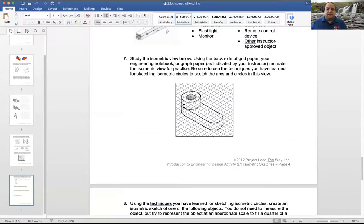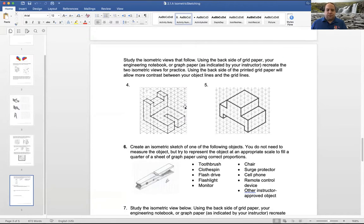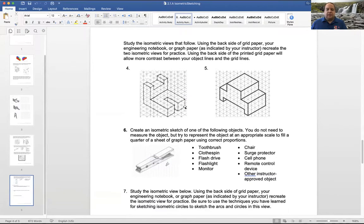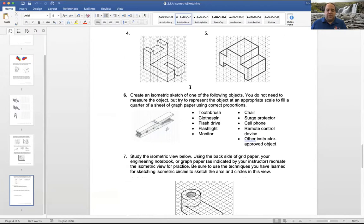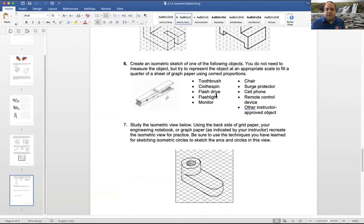You guys are going to pick some shapes. For homework yesterday, I had you do up to number five. Well, now, on that same Word document, we're going to do six, seven, and eight. You have to pick some shapes. So as we look here at some of the shapes that you can do, I will not allow you to do the clothespin. The clothespin is here, so we're not doing that one. But you can choose a toothbrush, a flash drive, a flashlight, a computer monitor, a chair, surge protector, cell phone, remote control. Any of those things.